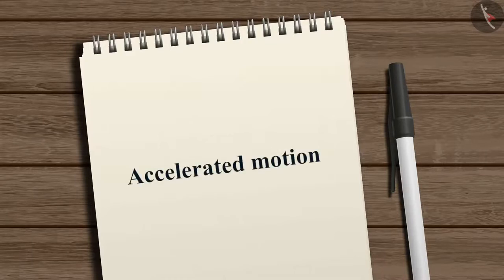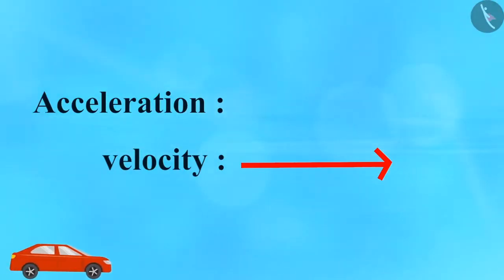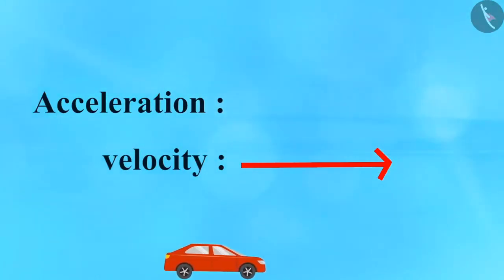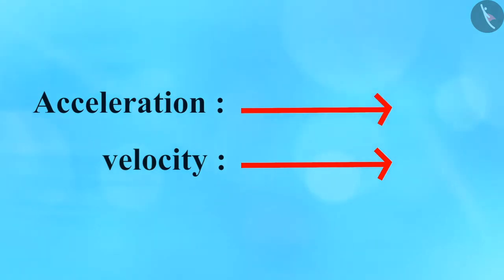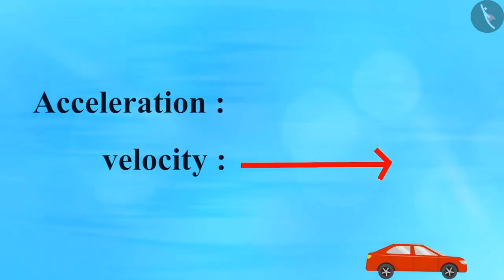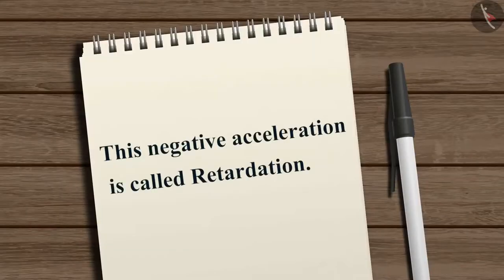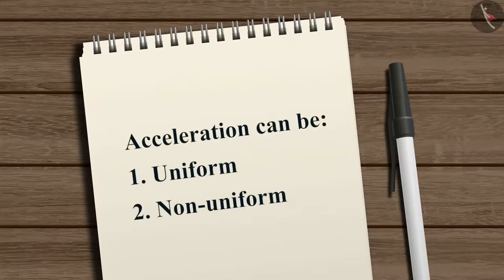This kind of motion is known as accelerated motion. Acceleration is taken to be positive if it is in the direction of velocity, and negative when it is opposite to the direction of velocity. This negative acceleration is called retardation. Acceleration can either be uniform or non-uniform.